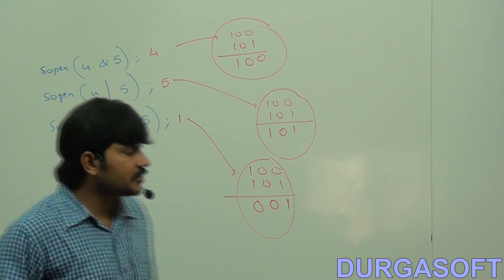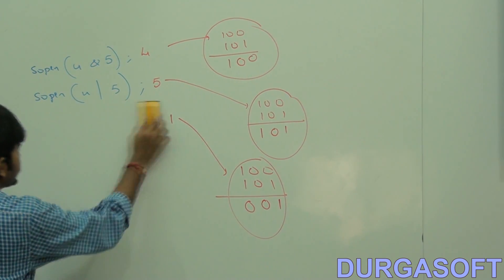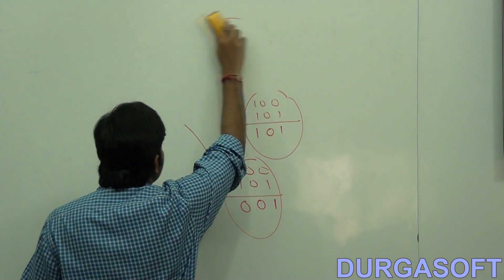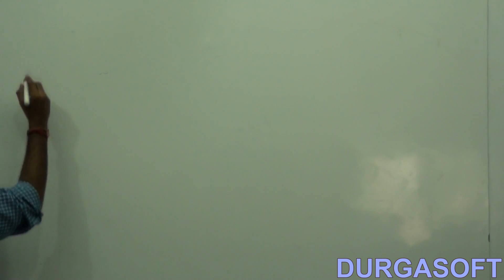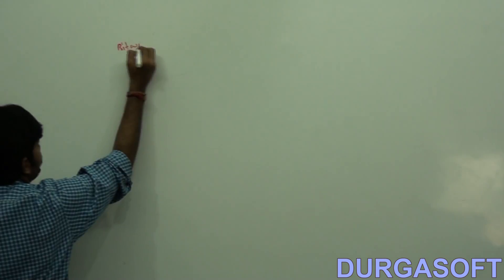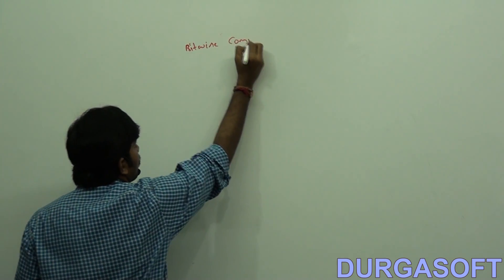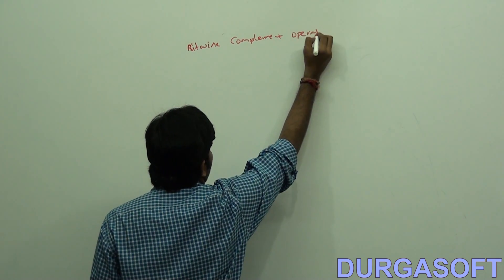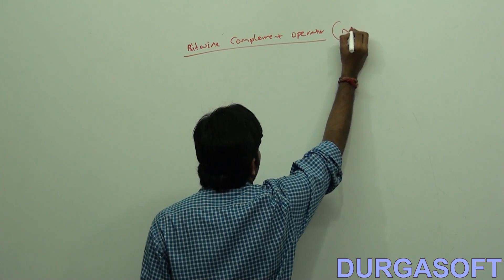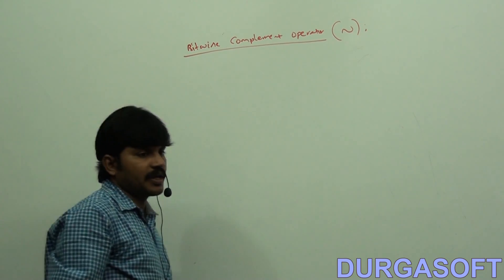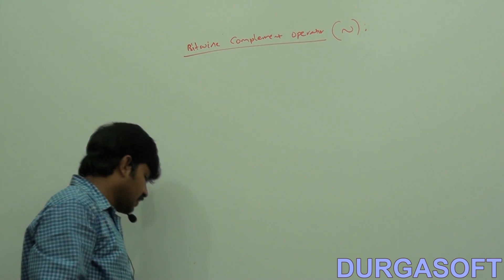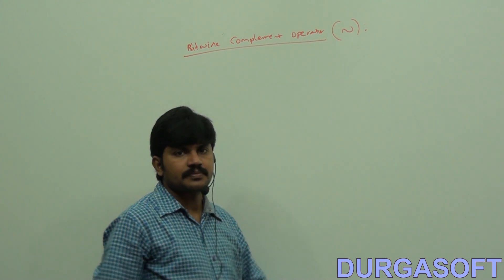Next subheading: bitwise complement operator, represented by the tilde symbol. System.out.println of negation of true - what is the answer? This will give a compile-time error, because the bitwise complement operator is applicable only for integral types, not for boolean type. The error is: operator tilde cannot be applied to boolean.